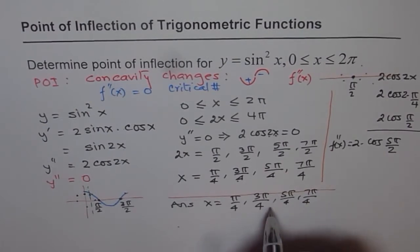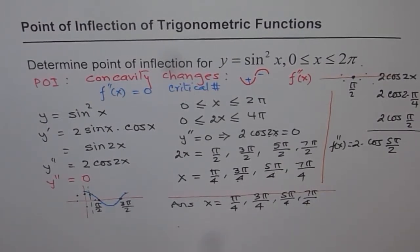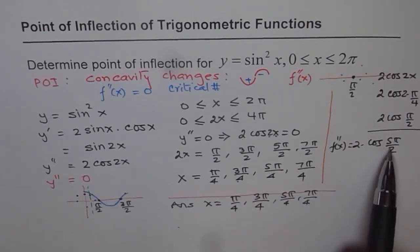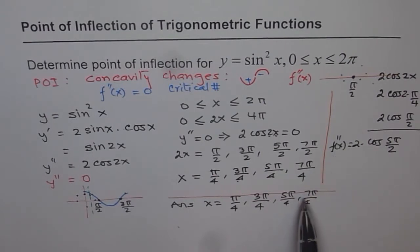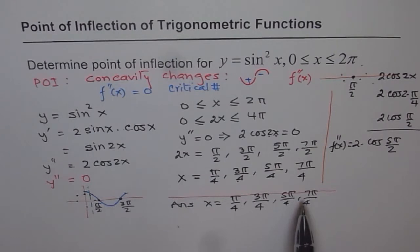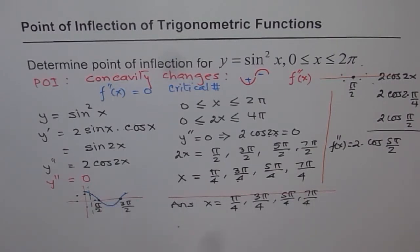So all four are our answers for this question. The points of inflection for y = sin²x on [0, 2π] are x = π/4, 3π/4, 5π/4, and 7π/4. The concavity changed on either side of each of these points, confirming they are all points of inflection. I hope that is absolutely clear. Thank you.